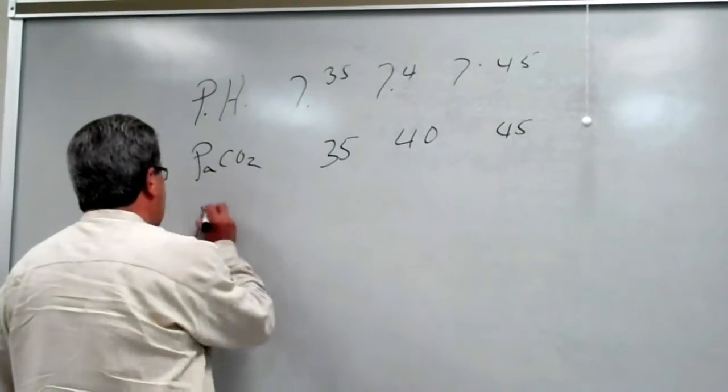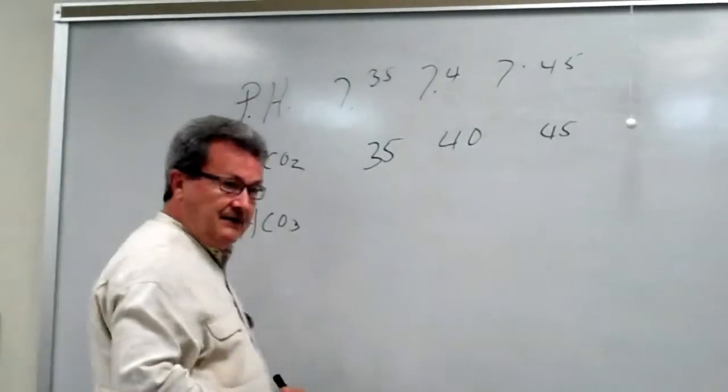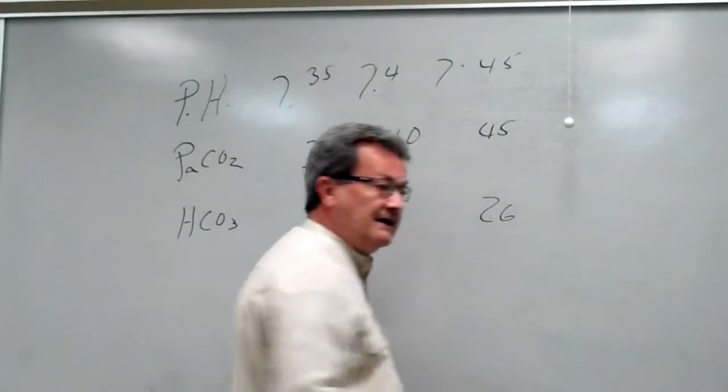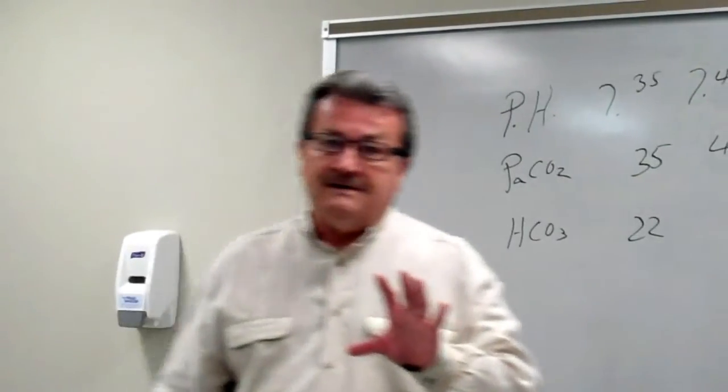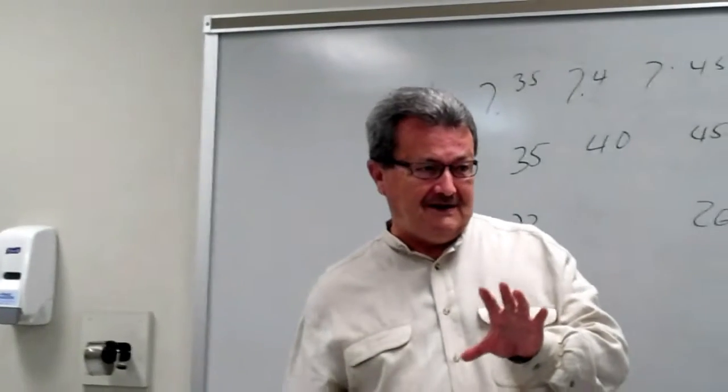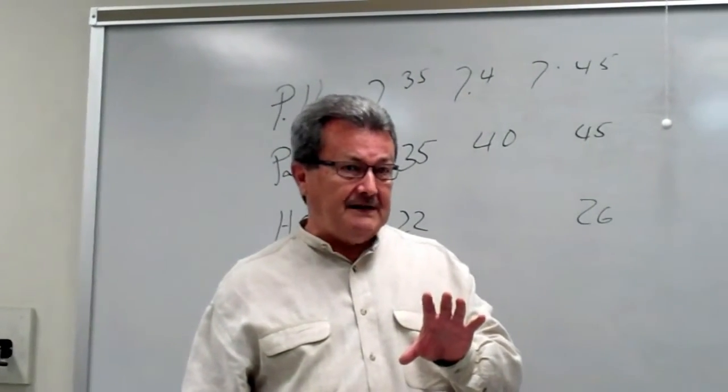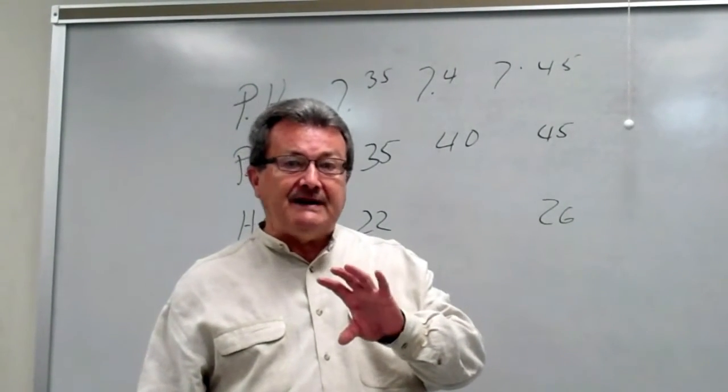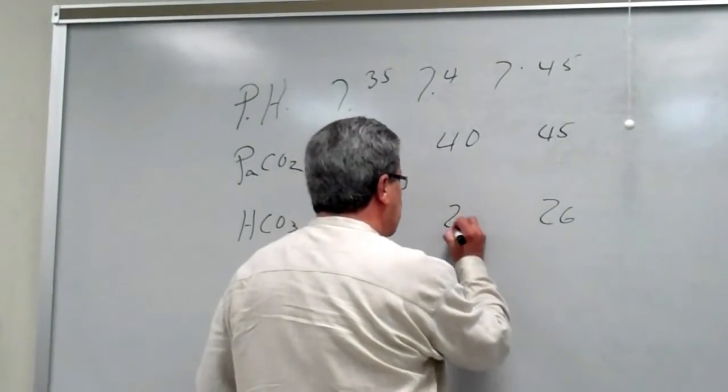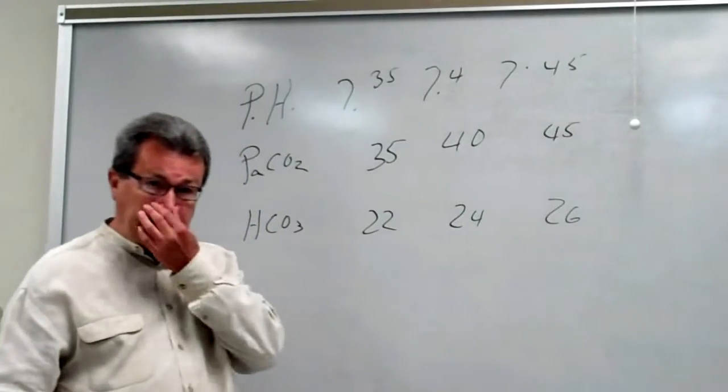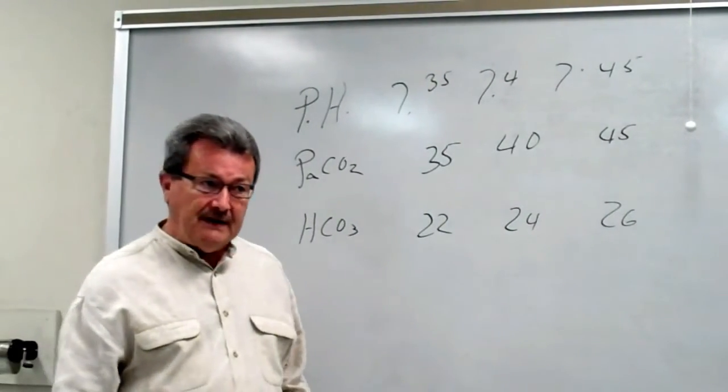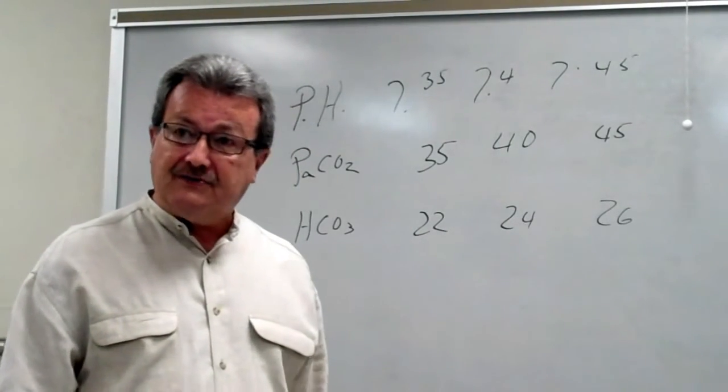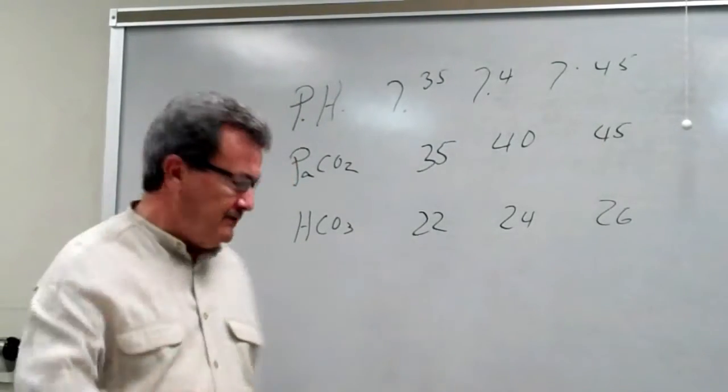Another thing we're looking at is bicarb, HCO3. The normal range of value for that is 22 to 26 milliequivalents per liter. The bicarb is a function of the kidney. We're looking at what's the kidney able to do as far as maintaining normal acid-base balance in the body. Absolute normal for this is 24. Here again, we have a direct relationship. Meaning that if bicarb goes down, the pH goes down. Bicarb goes up, pH goes up.